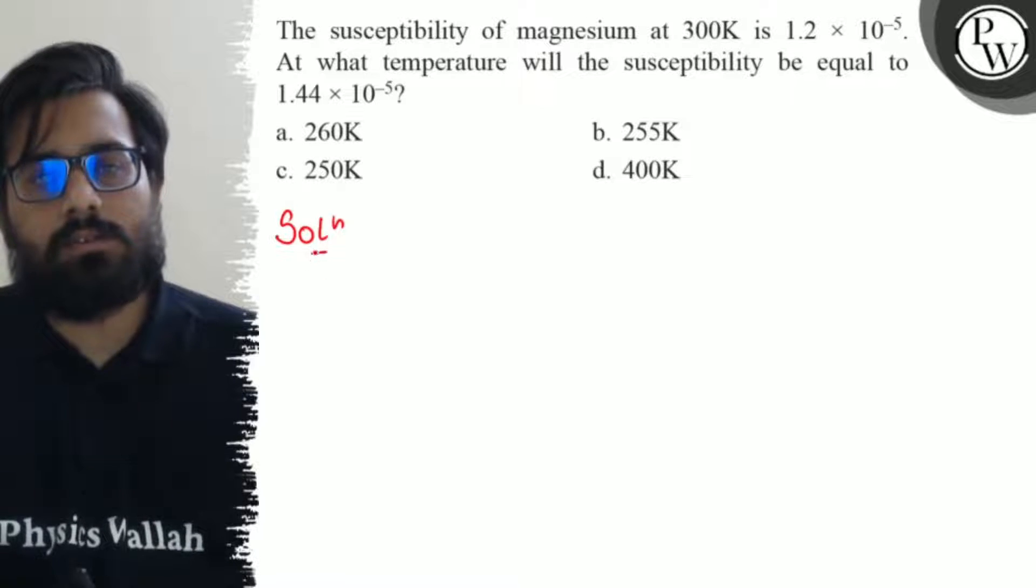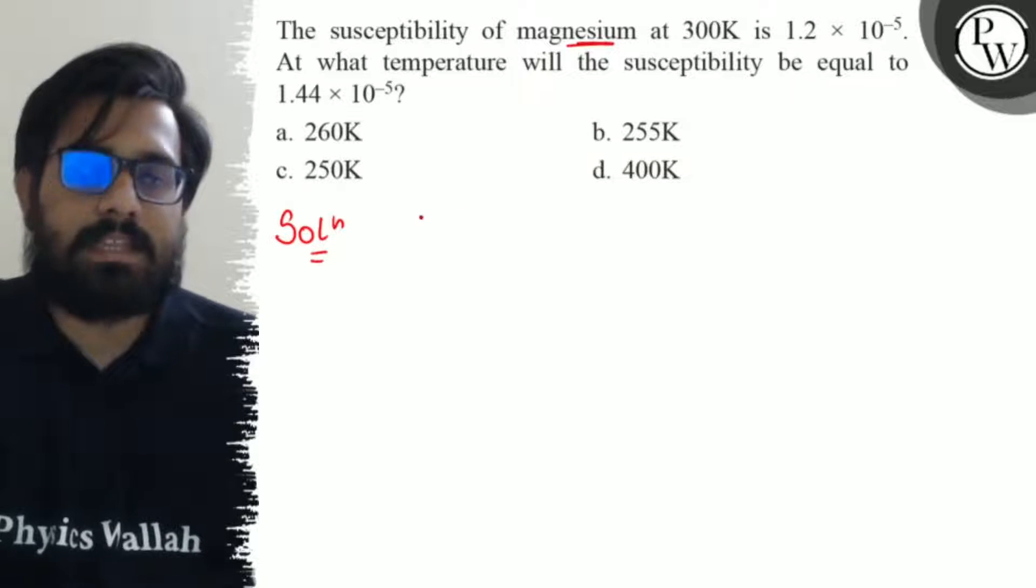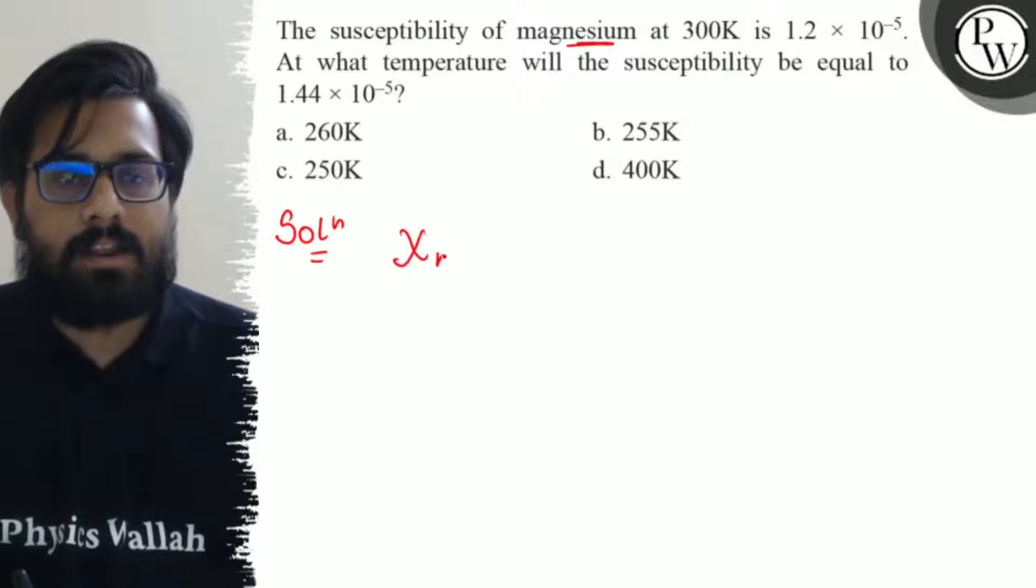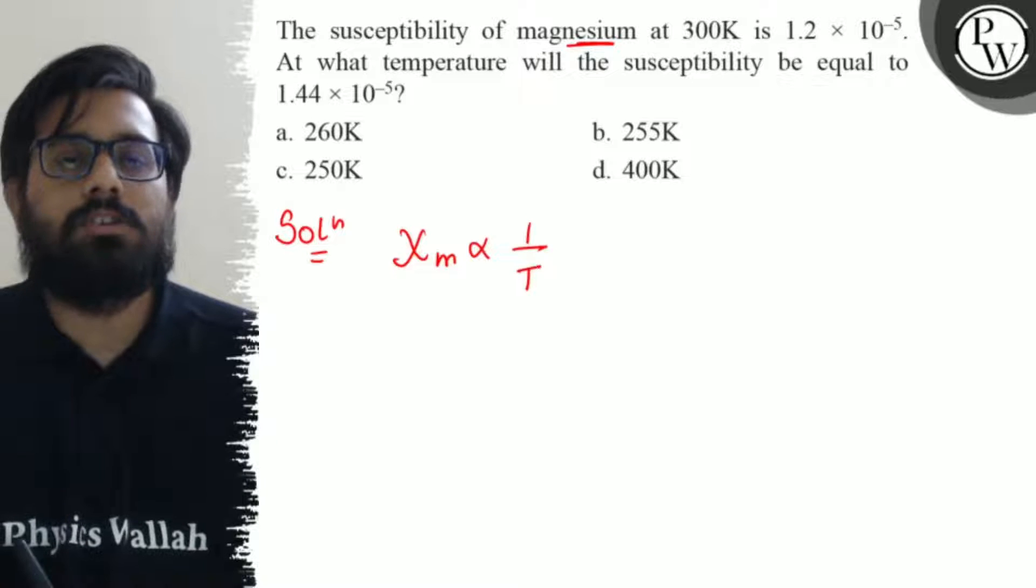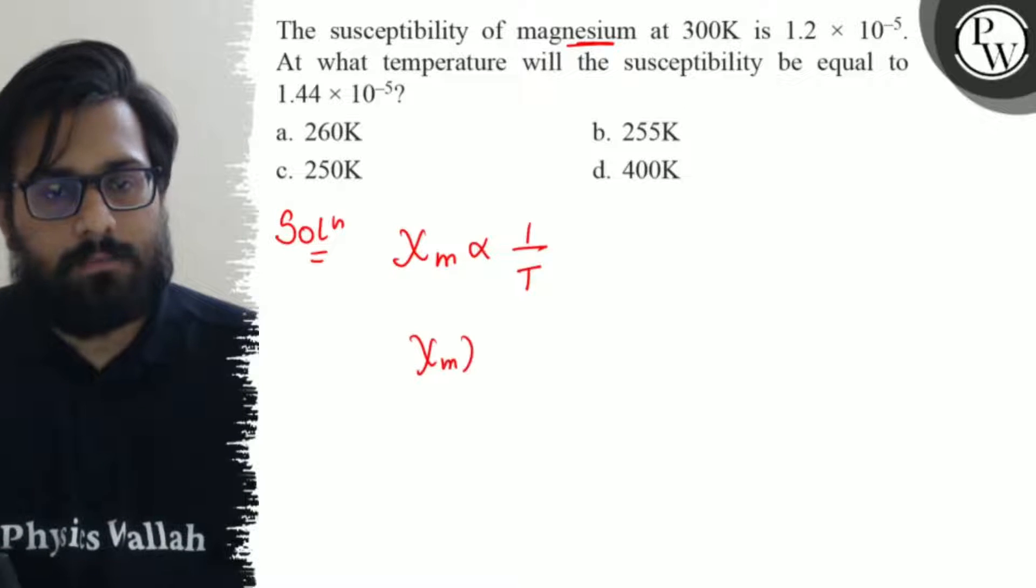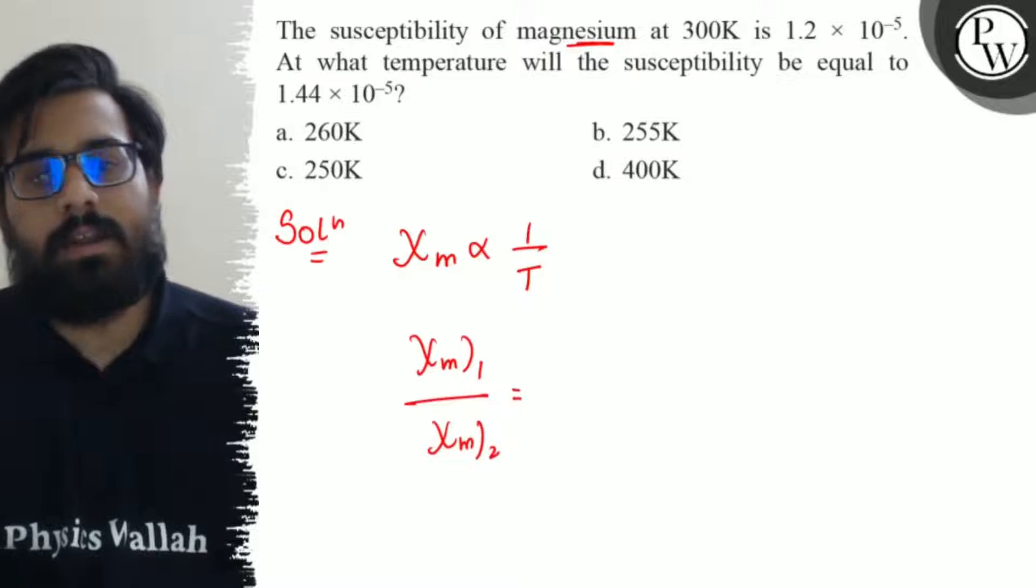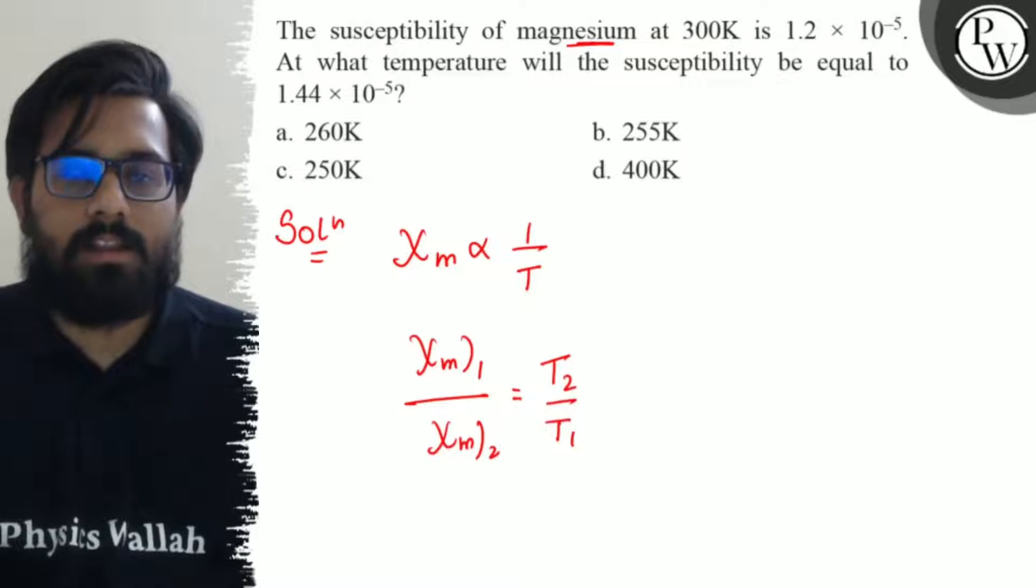So here in this question we know that magnesium is a paramagnetic substance and for paramagnetic substances, susceptibility is inversely proportional to temperature. So susceptibility in the first case divided by susceptibility in the second case can be written as T2 by T1. We have to calculate the value of T2.